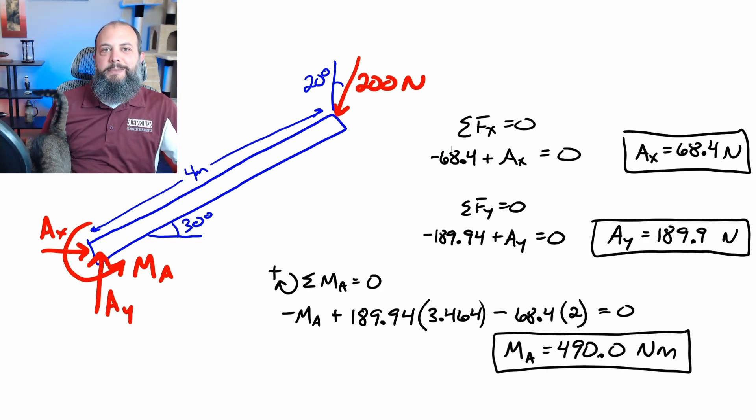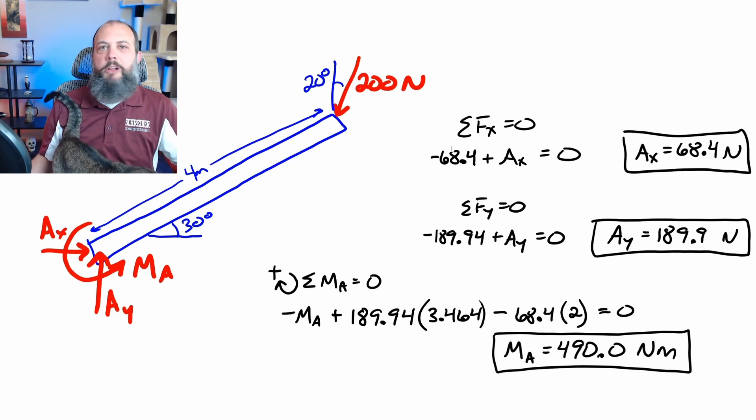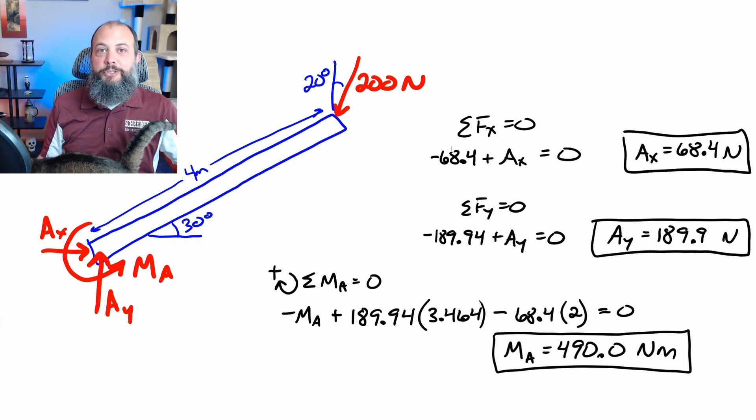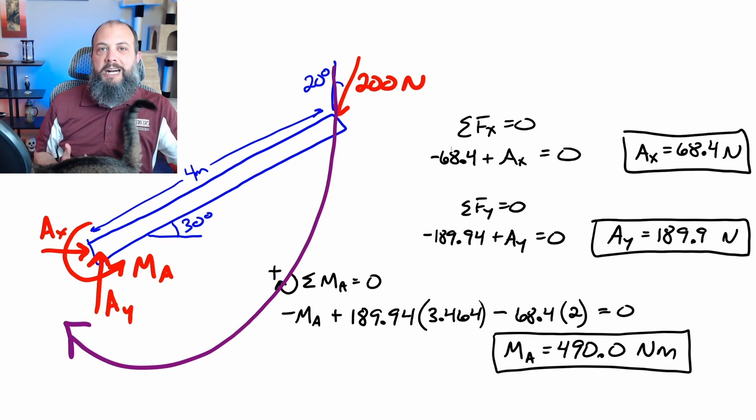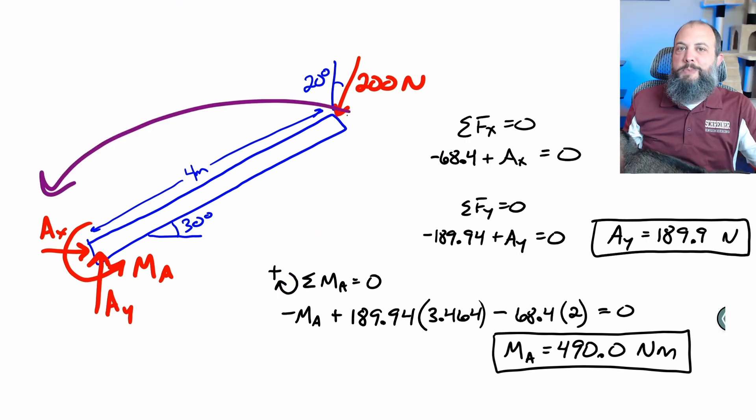For the sum of moments at A, I arbitrarily chose the clockwise direction to be positive, but if you call it the other direction, that's fine too. So I had negative MA because the way I drew MA on my free body diagram is going in the negative direction that I chose. The downward pointing force is positive because, as you can see by this purple arrow, it would cause clockwise rotation about point A. And the X direction term is negative because, again, by this new purple arrow, you can see that it would cause counterclockwise rotation about point A, which is the negative direction.